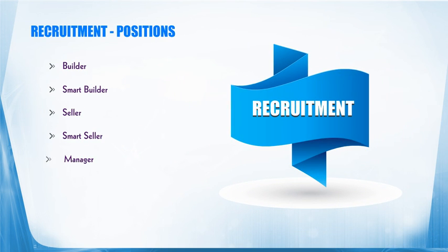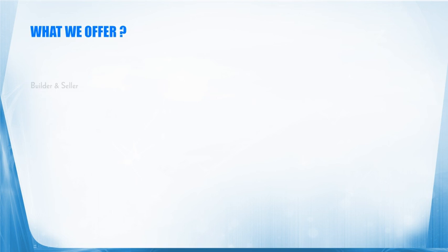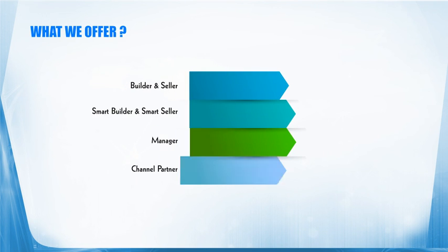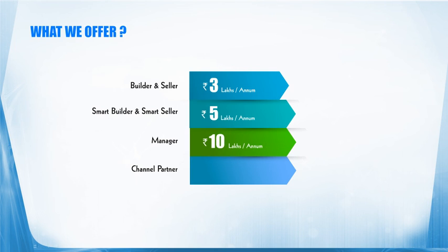In team building, having done all the four steps successfully, you build a team under you with people consisting of both programmers and sellers, and repeat the sell and build activity through your team. When you do all this, you'll be fit into one of these positions: builder, smart builder, seller, smart seller, manager, and channel partner. Now, what is the CTC we offer? For builder and seller, we offer 3 lakhs per annum. Smart builder and smart seller, 5 lakhs per annum. Manager, 10 lakhs per annum. And a channel partner can earn anything more than 10 lakhs per annum.